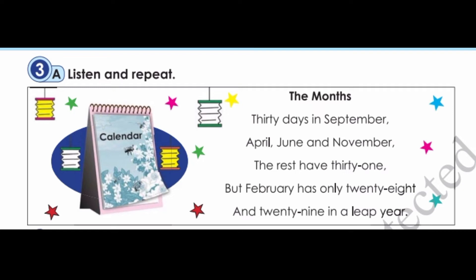Track 30, Exercise 3A: Listen and repeat. The months: 30 days in September, April, June and November. The rest have 31, but February has only 28, and 29 in a leap year.